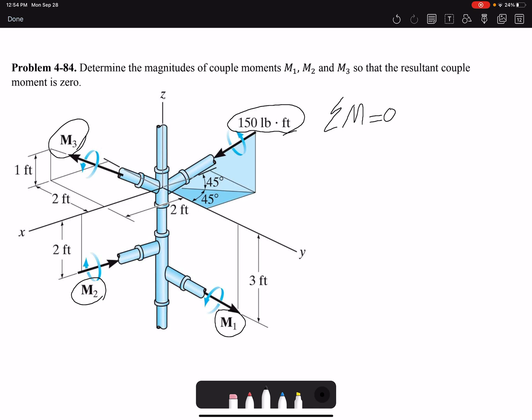Because it's 3D, I need all my moments in vector form. So moment one, M1, I don't know the magnitude but I know the direction. The direction is towards positive y, so that would be M1 j.